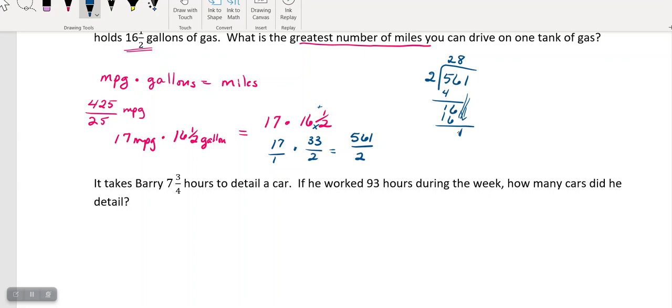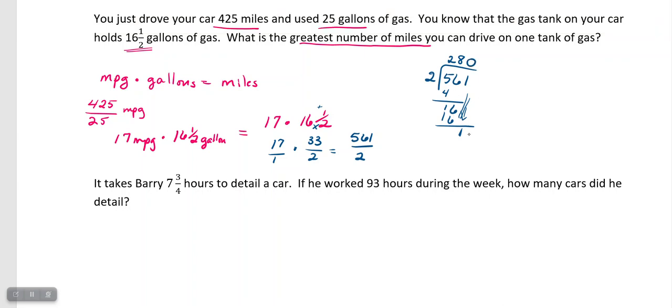So, 2 will go into 1, so I put a 0 there, and I don't have anything to bring down. So 280 is my whole number, that's my whole number of miles. My remainder is I have a 1 left over. So, I can go 280 and 1 half miles. 280 and 1 half miles is the greatest number of miles I can go on 16 and a half gallons of gas.